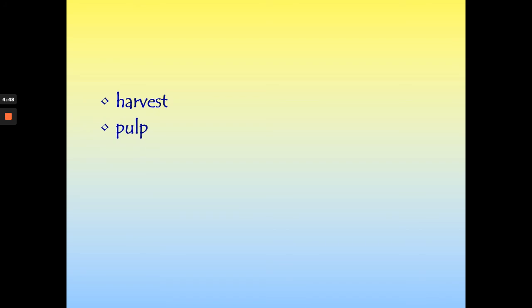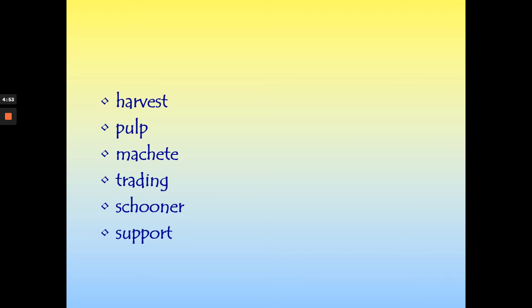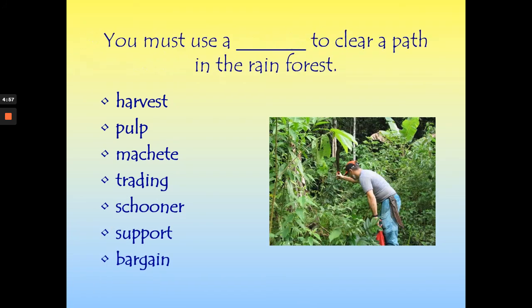The words this week are harvest, pulp, machete, trading, schooner, support, and bargain. Which word would go in the blank? 'You must use a blank to clear a path in the rainforest.' We would use a machete — that's what the man is holding here. A machete would clear the path.